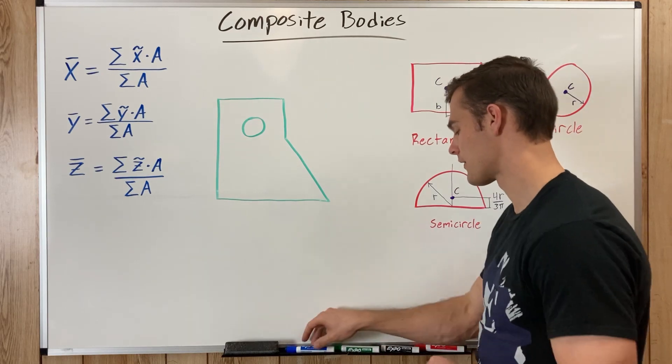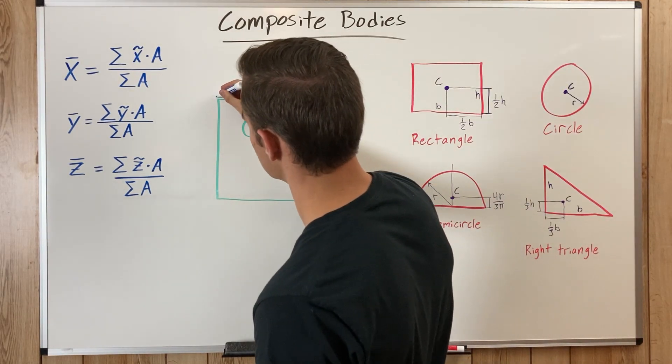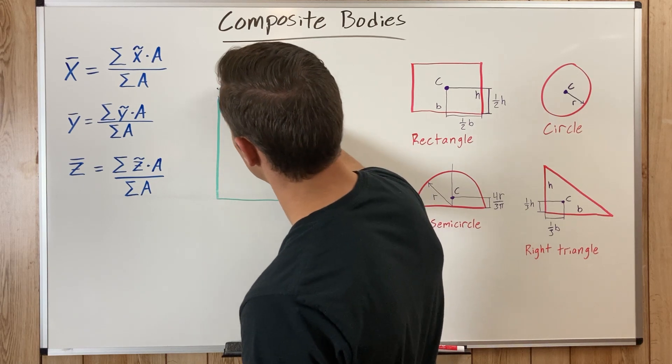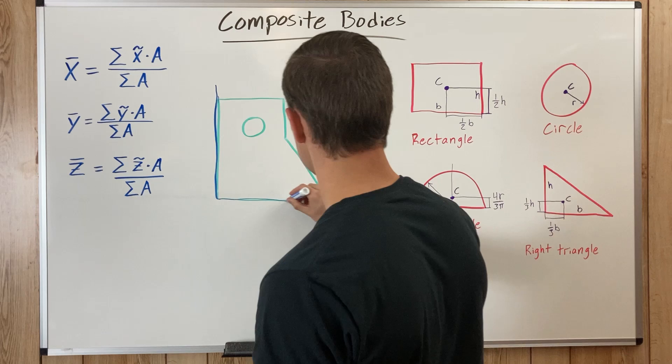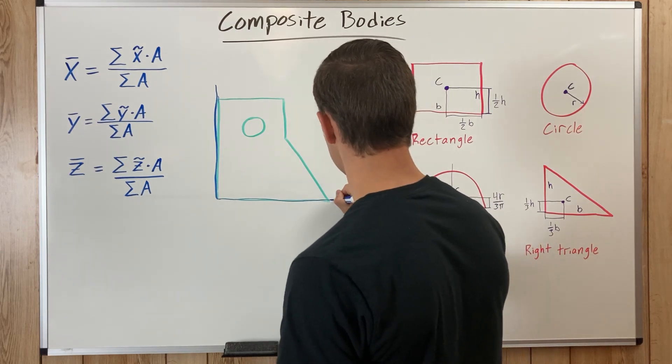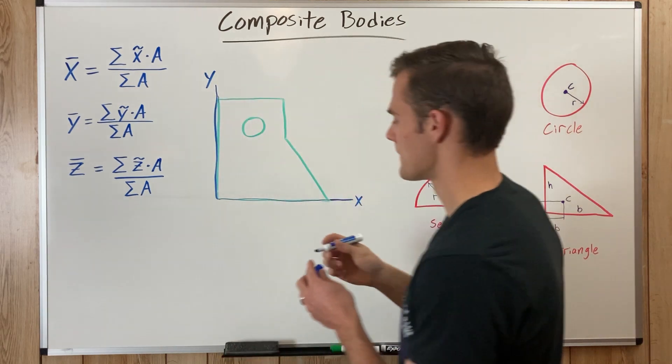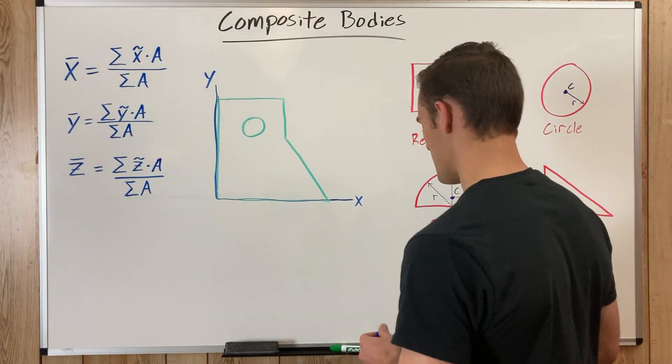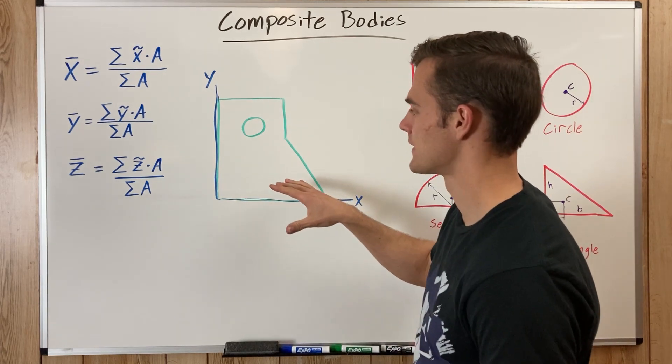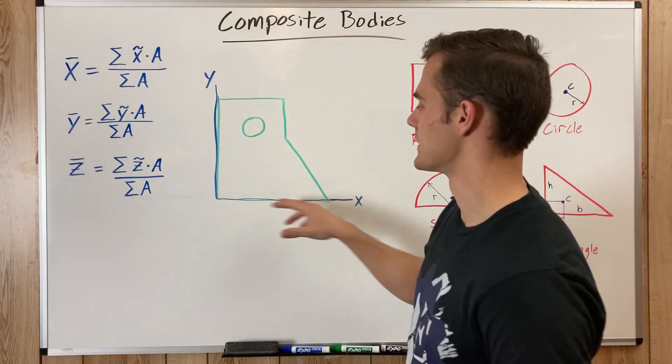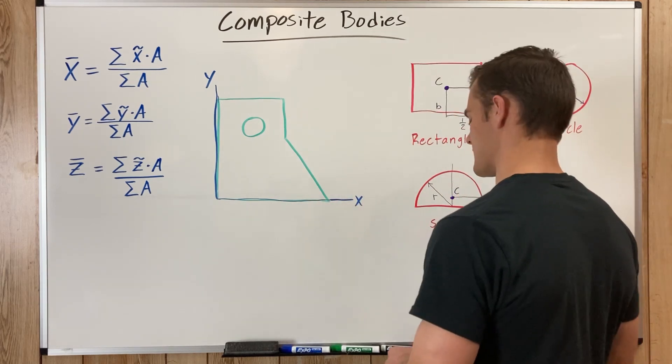And to start off, we are going to make our coordinate system. So it doesn't really matter where you make your coordinate system. On this one, we'll just make it like this, where this is the x-axis and this is the y-axis. And then from there, all of our centers of mass will be based on this x and y-axis or coordinate system.